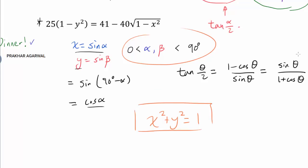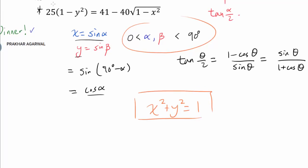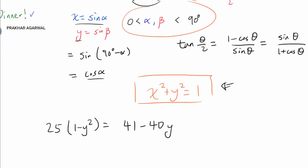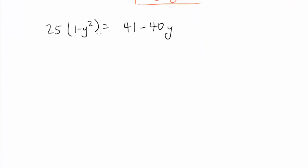So let's look at the second equation, which has 25 times 1 minus y squared is 41 minus 40 times square root of 1 minus x squared, according to this equation, is going to be y. And now it's a routine exercise to find y. Rearranging this gets us 25y squared minus 40y plus 16 is 0, also known as 5y minus 4 squared is 0, or y is 4 fifth.